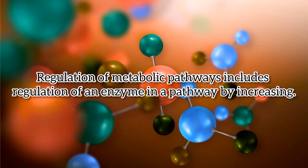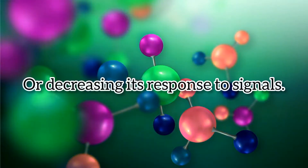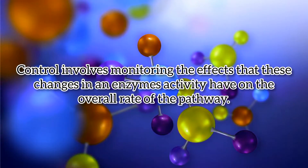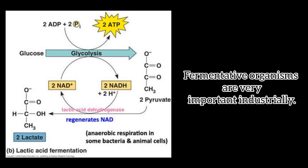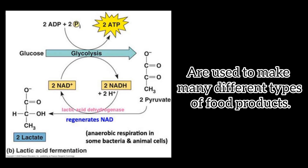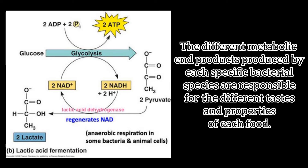Regulation of metabolic pathways includes regulation of an enzyme in a pathway by increasing or decreasing its response to signals. Control involves monitoring the effects that changes in enzyme activity have on the overall rate of the pathway. Microbial metabolism is important because of fermentation — fermentative organisms are very important industrially and are used to make many different types of food products. The different metabolic end products produced by each specific bacterial species are responsible for the different tastes and properties of each food.